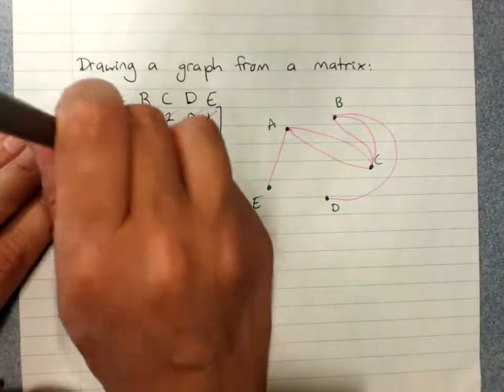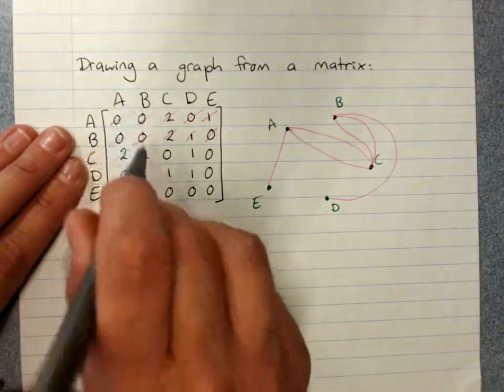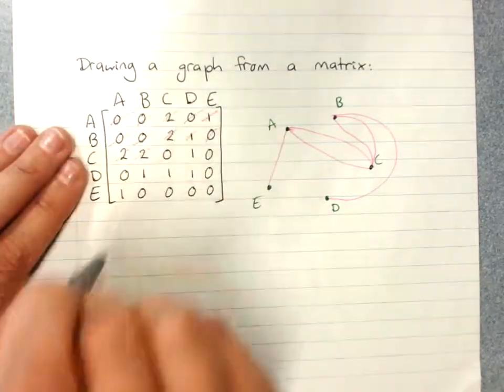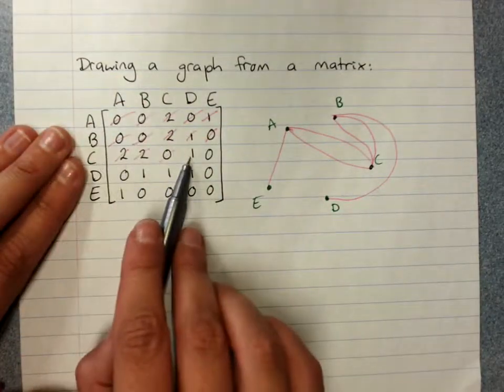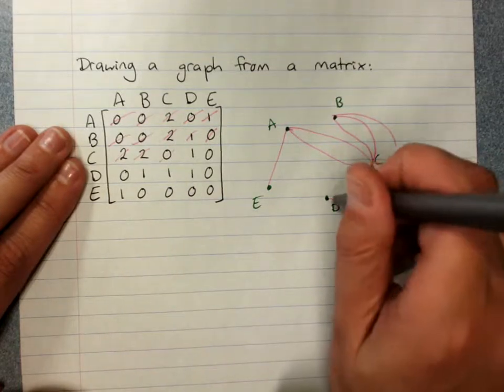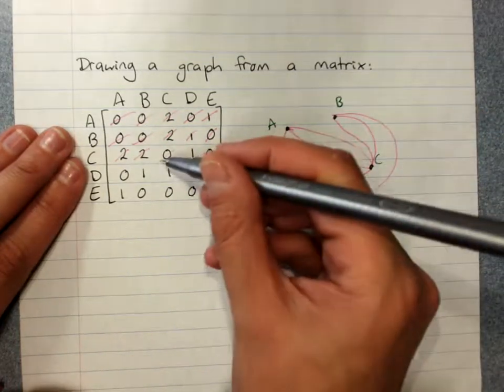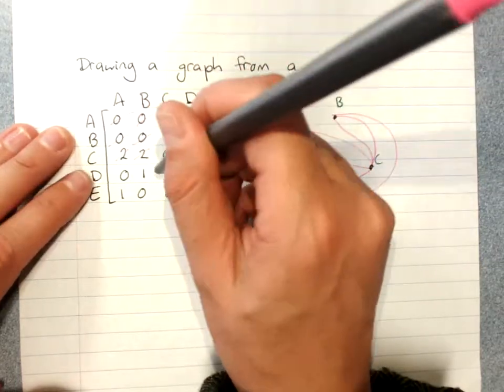C and A we did because we did A to C. C and B we did. Nothing between C to C. C to D, I've got to put that one in. And remember you can then also go through once I've done C to D and say that means I've done